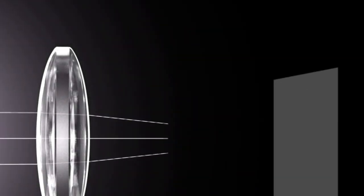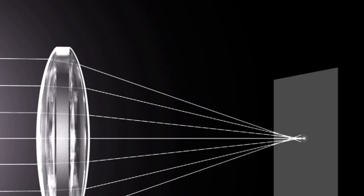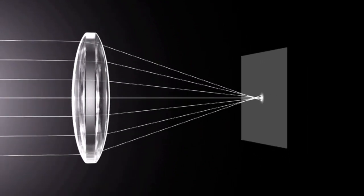The position of the focal point for the light that passes through the center of the lens and the light that passes through surrounding areas does not line up. This misalignment causes the image to become blurred.